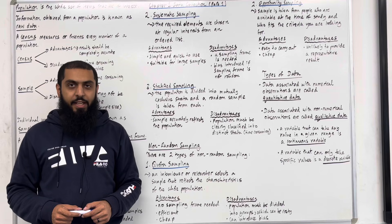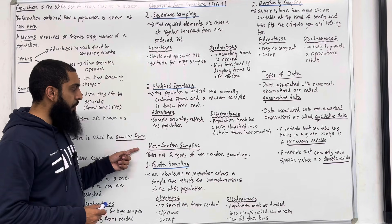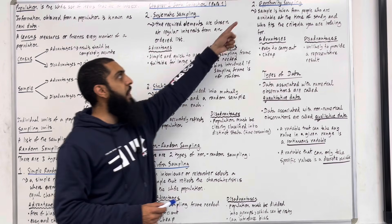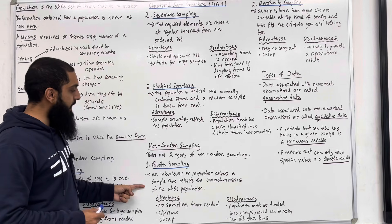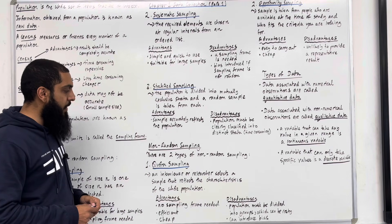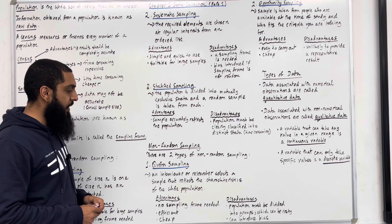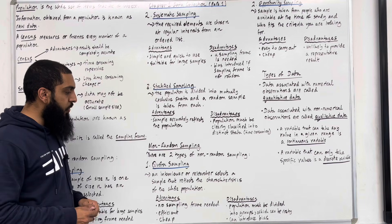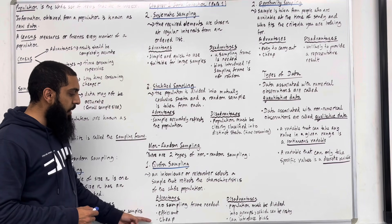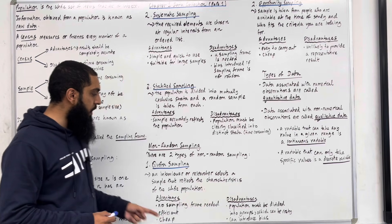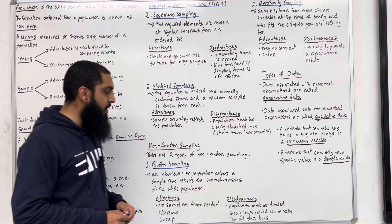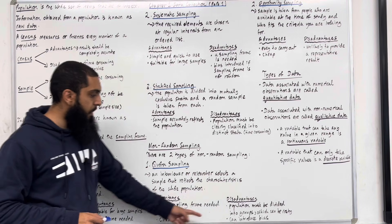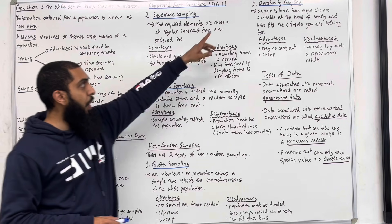Moving on to non-random sampling techniques. There are two types of non-random sampling. The first is quota sampling, the second is opportunity sampling. In quota sampling, an interviewer or researcher selects a sample that reflects the characteristics of the whole population. The advantages are: number one, no sampling frame needed; number two, it is efficient; number three, it is cheap. The disadvantages are: number one, the population must be divided into groups, which can be costly and time consuming; number two, it can introduce bias.